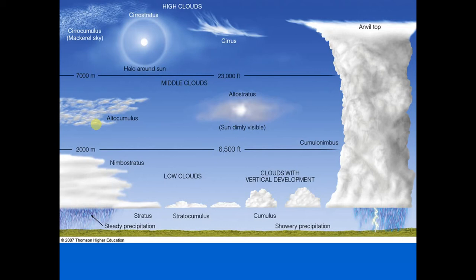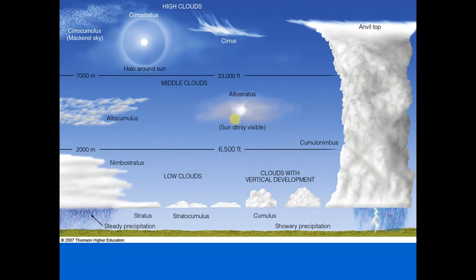Altostratus is a gray or blue-gray sheet-like cloud that often covers the entire sky. When altostratus covers the sun, the sun may take on a watery, fuzzy appearance. Thick cirrostratus may sometimes be confused with thinner altostratus, but clues include color — altostratus is a little darker — and the sun: through cirrostratus you should be able to see it easily, whereas through altostratus the sun looks distorted.